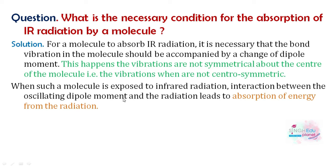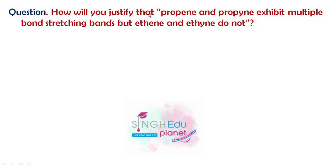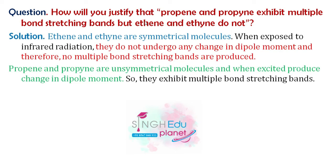Symmetrical molecules like ethyne (but-3-enal symmetrical case) will not show any change in dipole moment when exposed to infrared radiation, so no bond stretching absorption bands are produced. However, propane and unsymmetrical molecules, when excited, will change their dipole moment, which is why they exhibit IR absorption bond stretching.